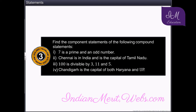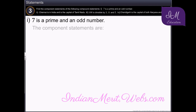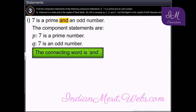Find the component statements of the given compound statements. Let's begin with the first statement: 7 is a prime and an odd number. The component statements are: 7 is a prime number, and 7 is an odd number. Here the connecting word is 'and'.